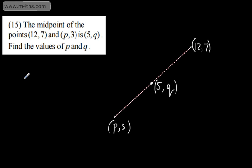But what you could do is consider now the x-coordinates. So using the midpoint, what we could say is that P plus 12 divided by 2 will give us 5. So this one plus this one divided by 2 gives us that. So we can see that P plus 12 is going to equal 10 and P is going to be equal to negative 2.